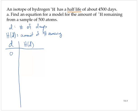Initially, after 0 days, there are 500 atoms in the sample. The half-life is 4,500 days, so after 4,500 days there would be 250 atoms remaining. After 9,000 days, there would be half of 250, or 125. After 13,500 days, there would be half of 125, or 62.5 atoms remaining, approximately.